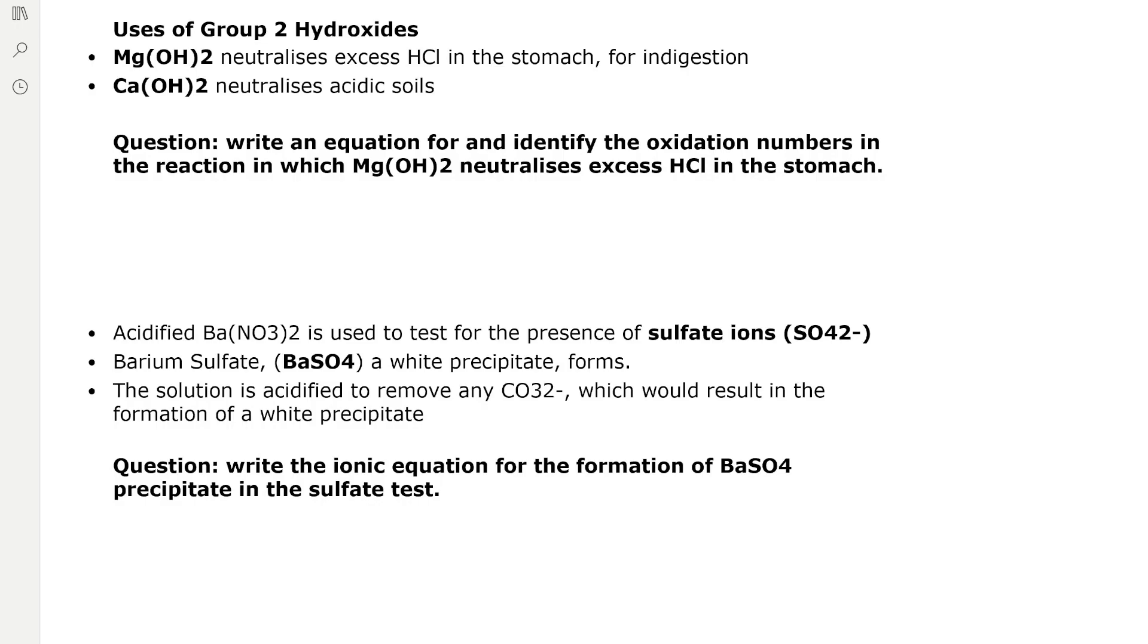The uses of group 2 hydroxides: magnesium hydroxide, also known as milk of magnesia, is used to neutralize excess hydrochloric acid in the stomach, which helps to cure indigestion. They're also known as antacids. And calcium hydroxide is used to neutralize acidic soils in agriculture.